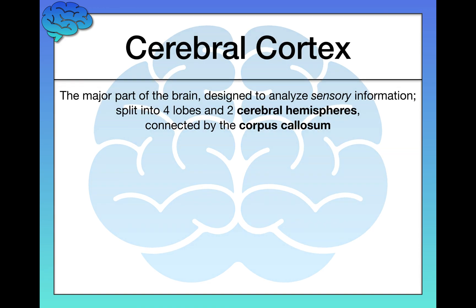We're going to talk a lot in the first half of the video about the cerebral cortex, which is the major part of the brain. If you think about a brain or look at one, the cerebral cortex is what you're looking at — your typical idea of what a brain is and what it looks like. The job of the cerebral cortex is to analyze sensory information: what you can see, what you can smell, what you can touch.